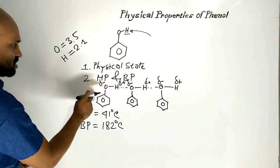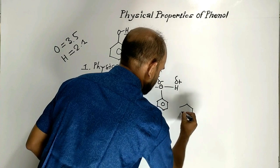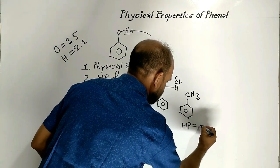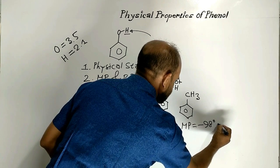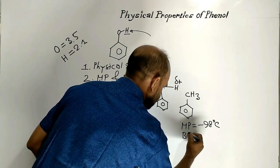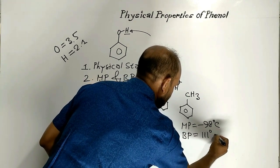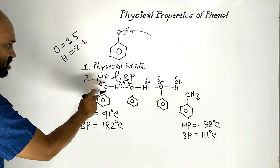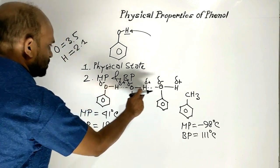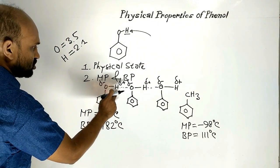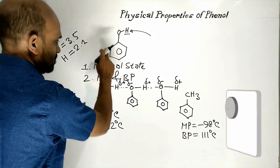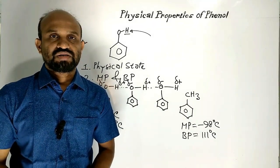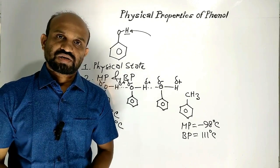But the corresponding aromatic hydrocarbon has a very low melting point of minus 98 degrees Celsius and a boiling point of 3.1 degrees Celsius. So because of the presence of the OH group in Phenol and the formation of hydrogen bonds, the melting and boiling points of Phenol are higher compared to the corresponding aromatic hydrocarbon, benzene or toluene.